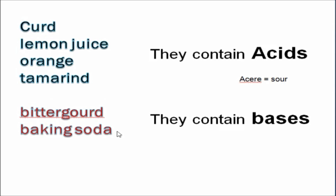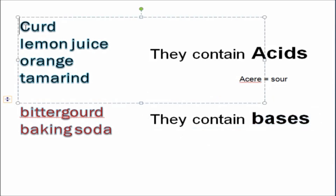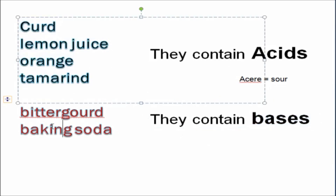Whereas bitter gourd and baking soda have a bitter taste or are soapy in texture because they contain chemicals called bases. They have bases, that's why they have a bitter taste.